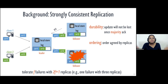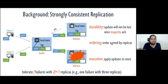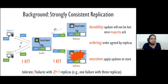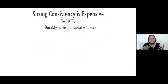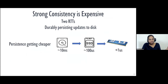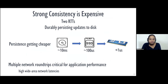From the time a client sends a request to when it receives a response, it incurs two network round trips plus the cost of persisting updates on each node. Achieving strong consistency is expensive because of these two steps. With faster storage devices, the cost of persistence is being alleviated, but multiple network round trips still hamper performance — especially in wide-area settings. So what do we do about this high cost?